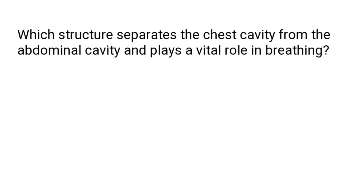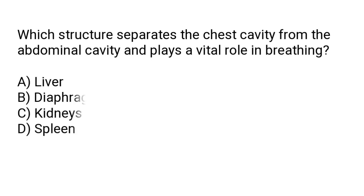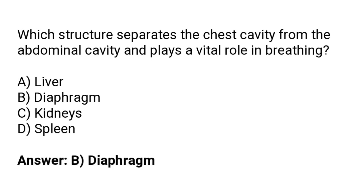Which structure separates the chest cavity from the abdominal cavity and plays a vital role in breathing? The options are: liver, diaphragm, kidneys, spleen. The correct answer is option B — the diaphragm separates the chest cavity from the abdominal cavity and plays a vital role in breathing.